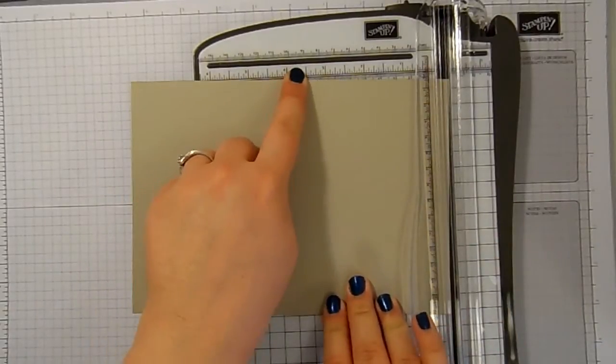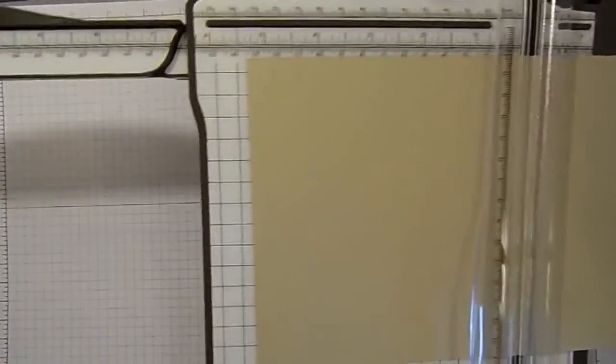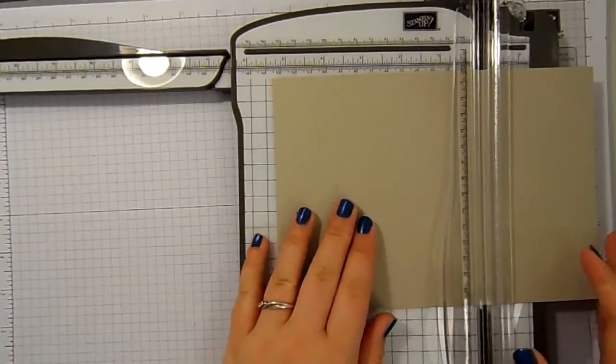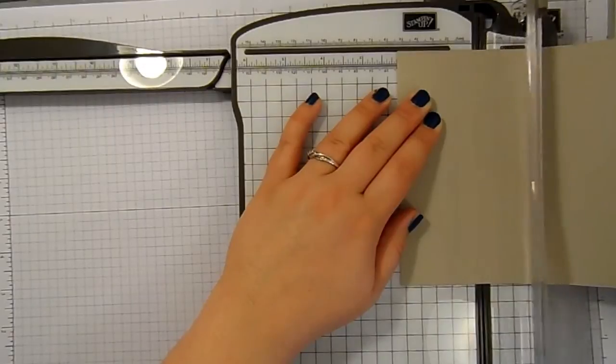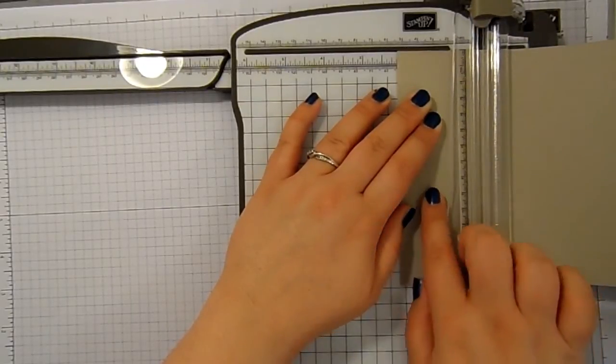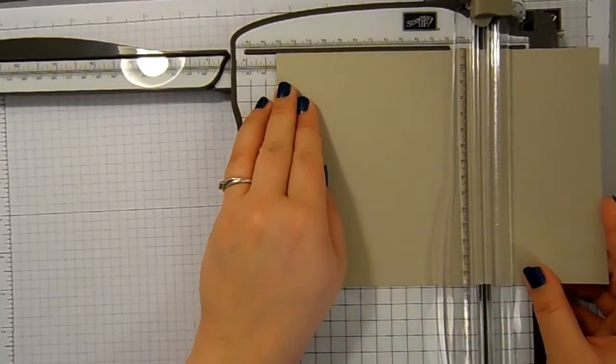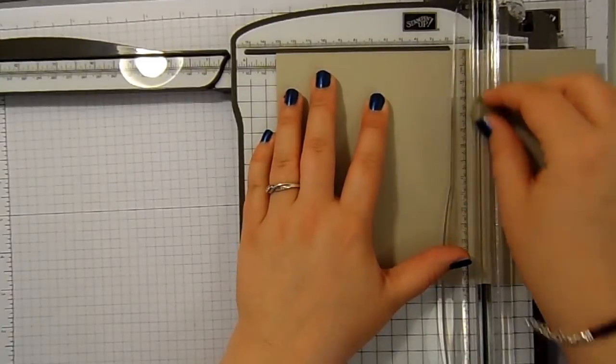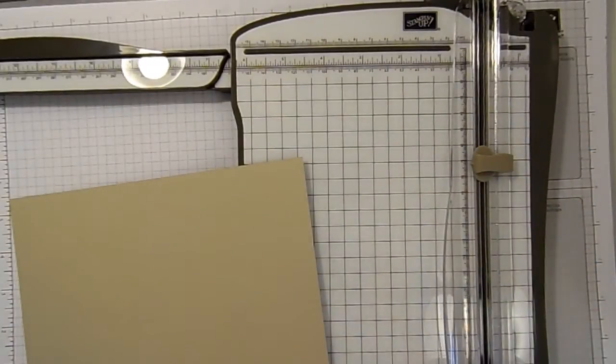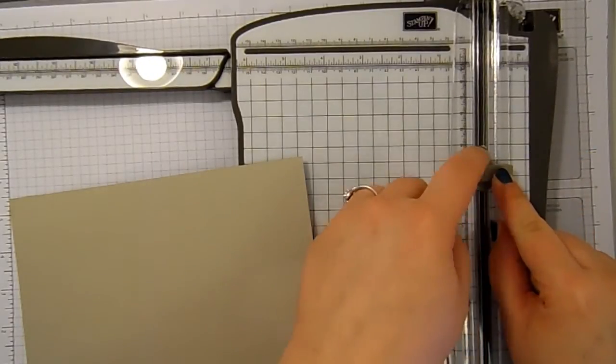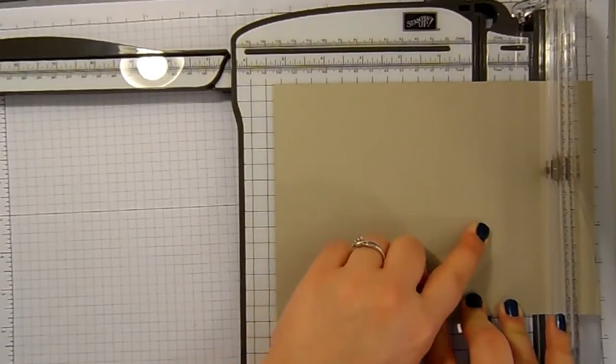I'm going to turn it this way so you've got the bigger gap between, so your score lands at the bottom effectively. And we're going to score at 2 and an eighth, just down to that 2 inch score line. 5 and a quarter, just down to that 2 inch score. You can see where that is because our blade has a little mark on it and that is where the blade is underneath. So that's 2 and an eighth down to that 2 inch score line. 5 and a quarter down to that 2 inch score line.